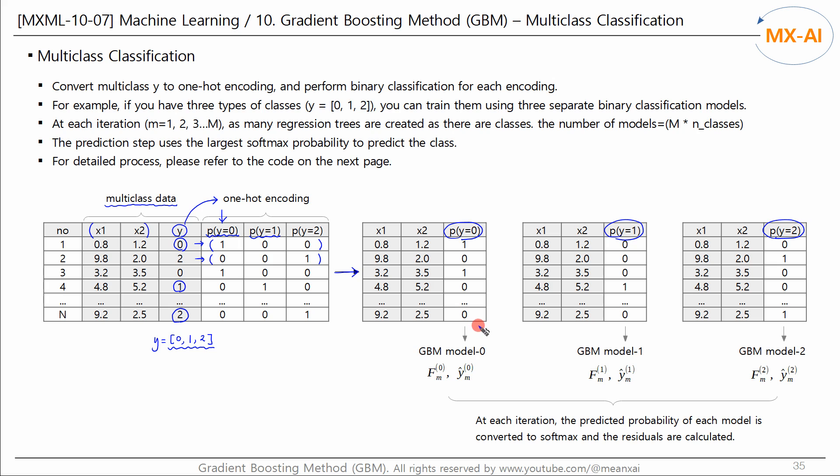Since each dataset has classes 0 and 1, the binary classification is possible. For each dataset, a GBM model is created and the binary classification is performed.